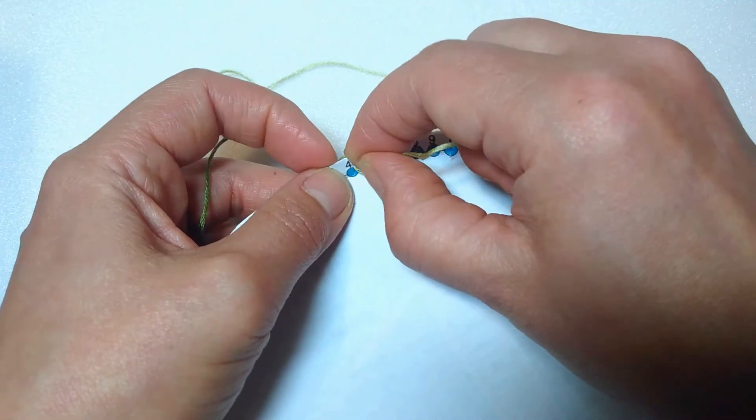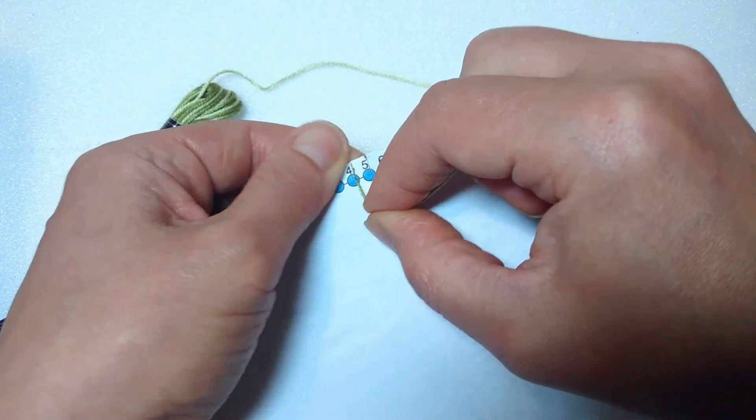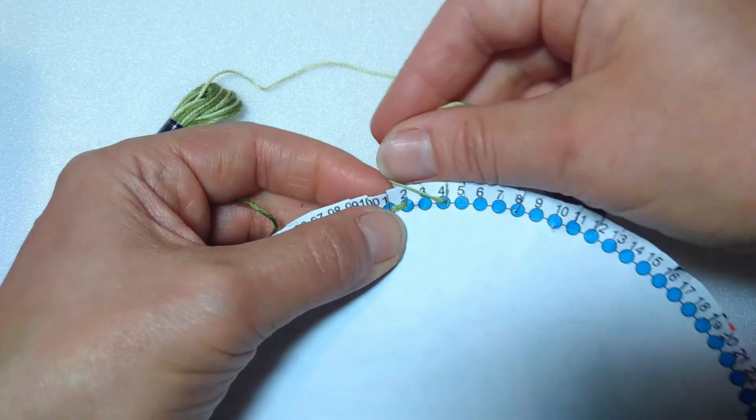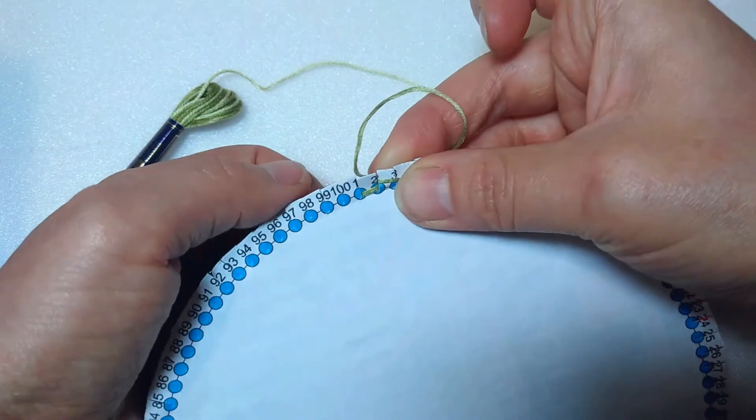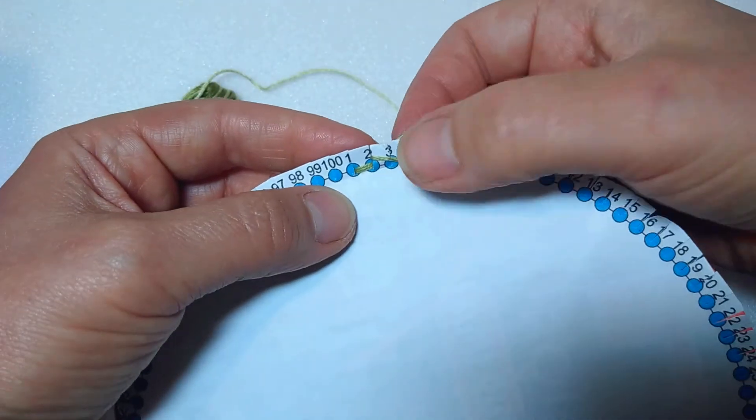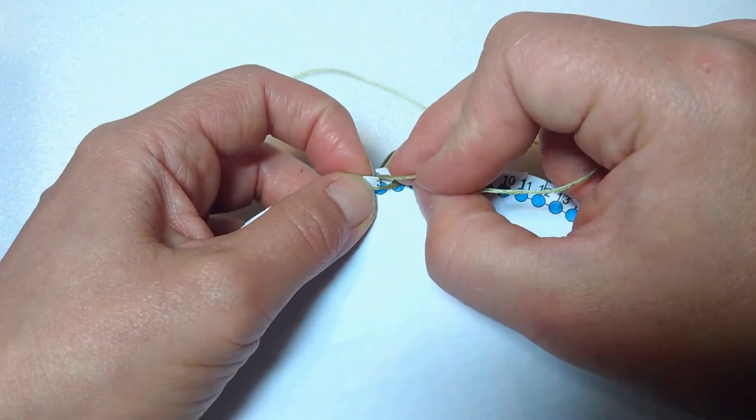For the next connection, we are going to work in the opposite direction. Run the thread behind your work and bring it out at 4 and connect it to point 2. Now bring the thread out at 3 and connect 3 to 6.